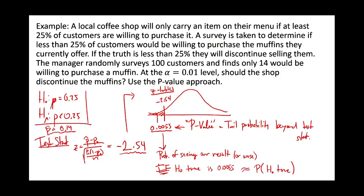It's almost saying the probability that the null hypothesis is true is quite low. The way you ultimately make your decision is to compare your p-value to your alpha level. If your p-value dips below your alpha level, you should reject the null hypothesis. In this case the p-value of 0.0055 is well below whatever alpha we set.